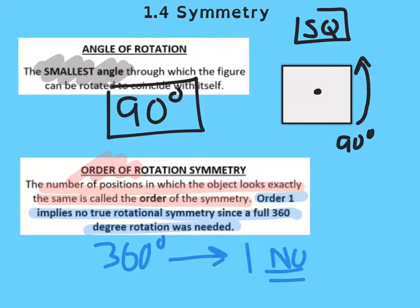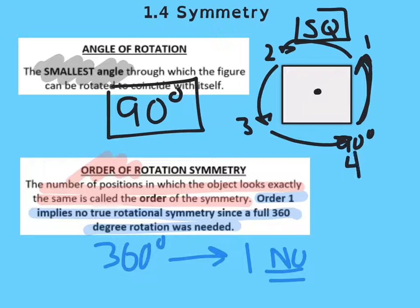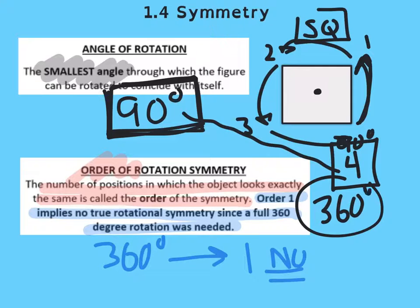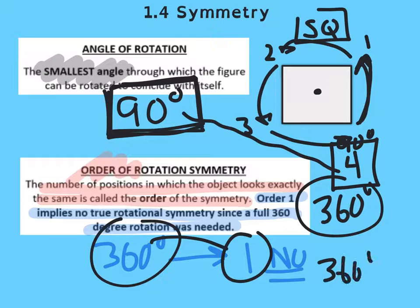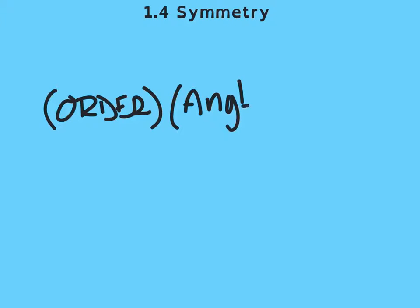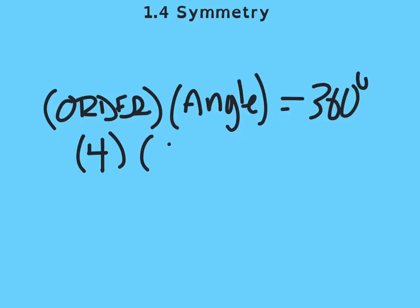Let's go back to the square. The square hits it at 90, again at 180, again at 270, and back — so that's 1, 2, 3, 4 times. The angle of the square is 90 and the order is 4. Notice there's a nice relationship: 4 turns of 90 is 360. In fact, if I had the order number and multiplied it by the smallest angle, I would always equal 360. Like in that square, there were 4 turns of 90 — that's 360.